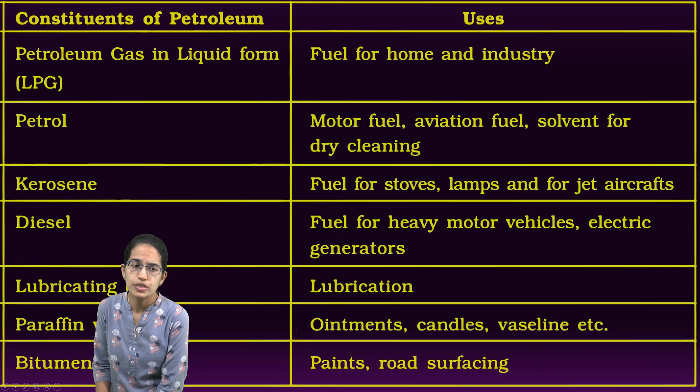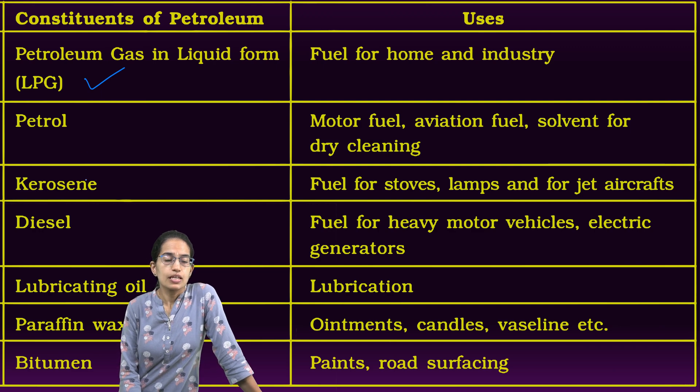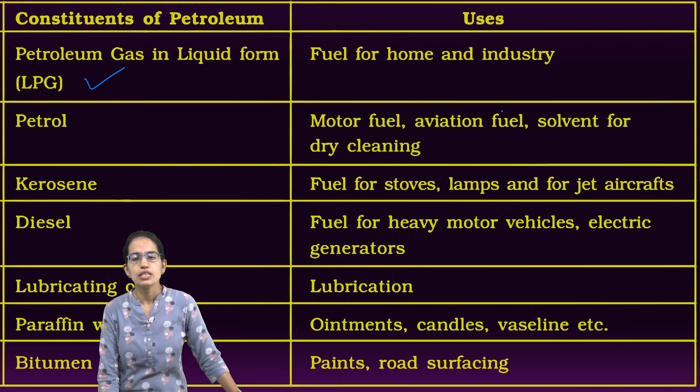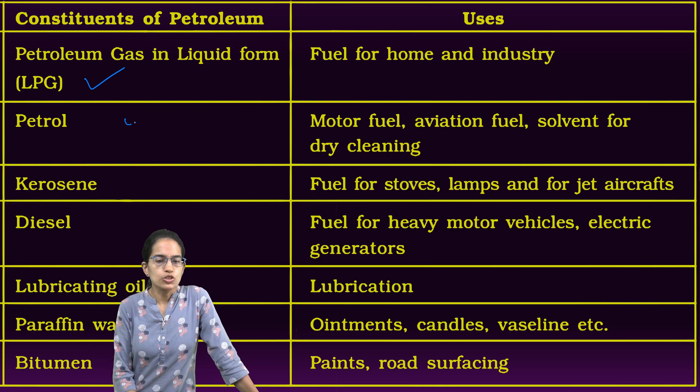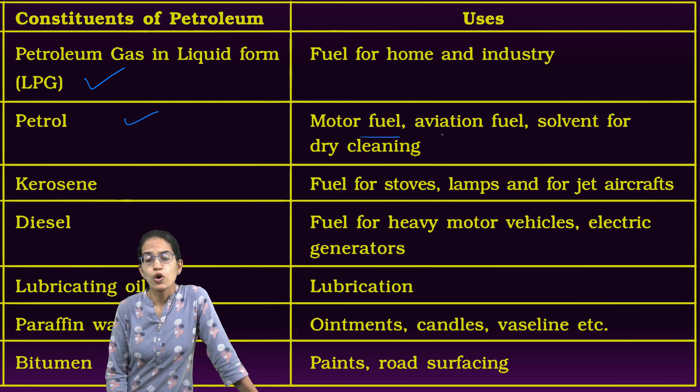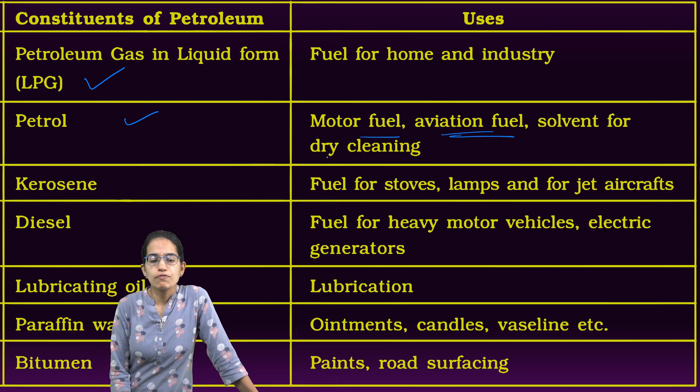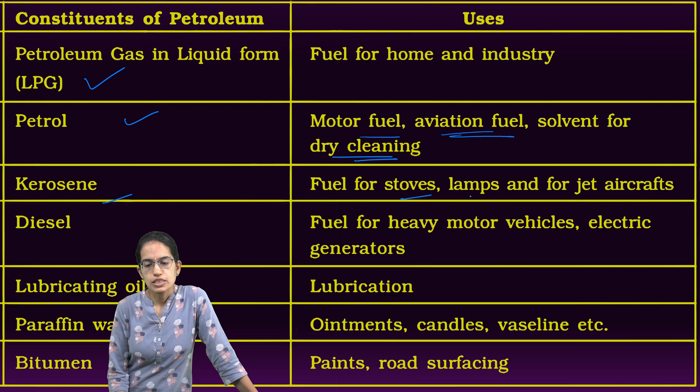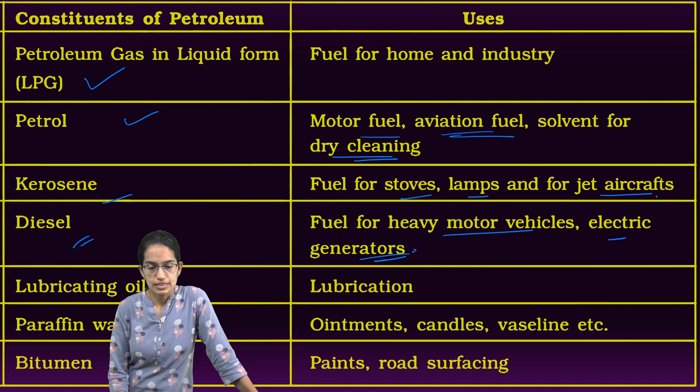Between the various impervious rocks, gas, oil and water remains. When wells are dug, this can be obtained and actually utilized. The constituents of petroleum: petroleum in liquid form can be LPG which is used as a common fuel for home and industry. Then petrol for motor vehicles, for aviation, jet fuels as a solvent for dry cleaning. Kerosene is used for stoves, lamps and jet aircrafts. Diesel is used for heavy motor vehicles and electric generators, mainly for generators nowadays.